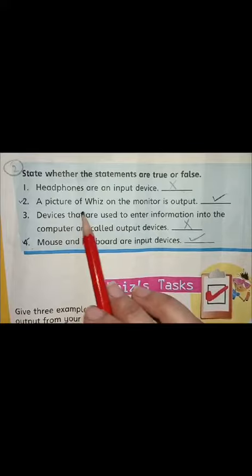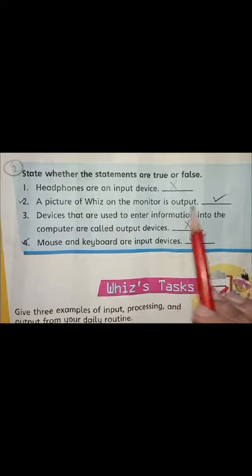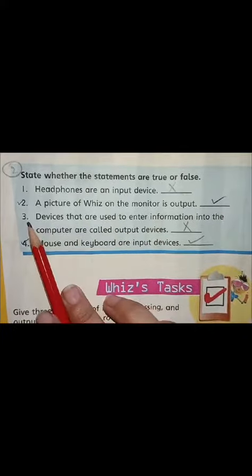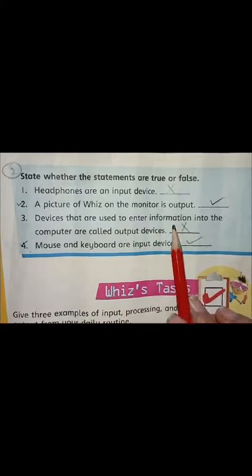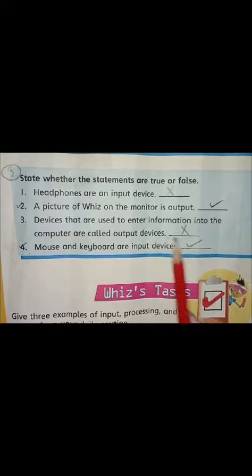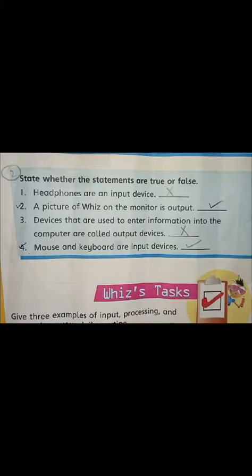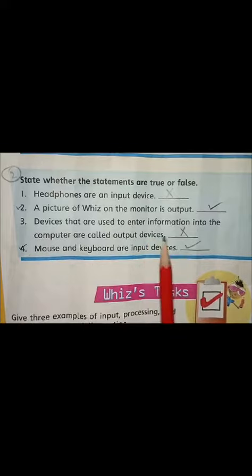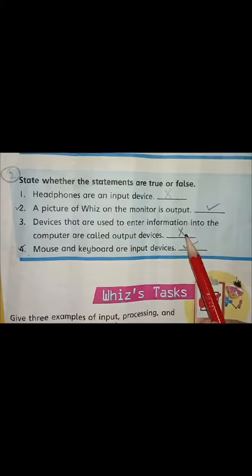Number two: a picture shown on the monitor is output. This is true. Number three: devices that are used to enter information into the computer are called output devices. This is false — the devices through which we can see the result are called output devices.